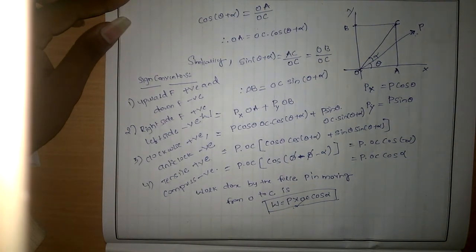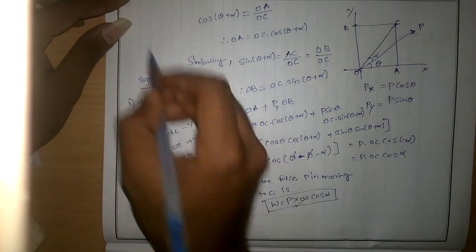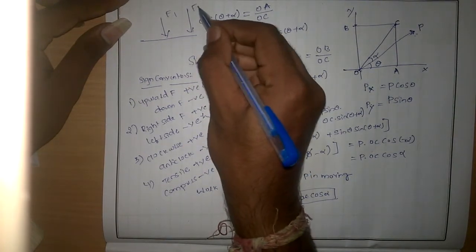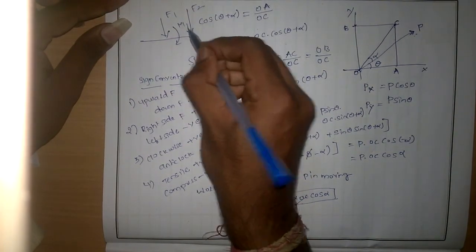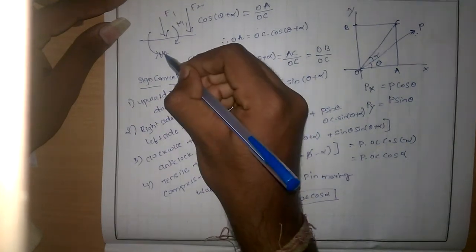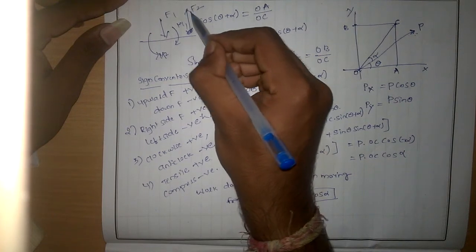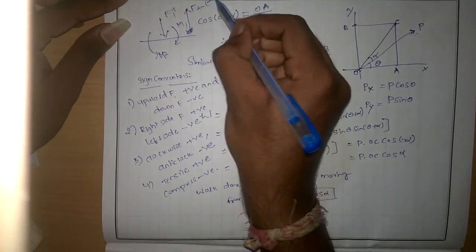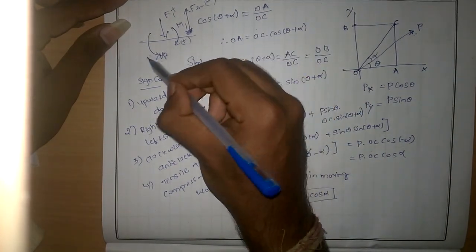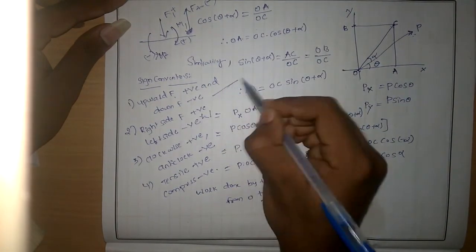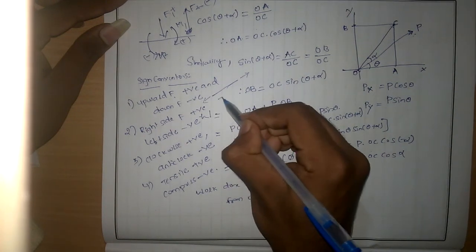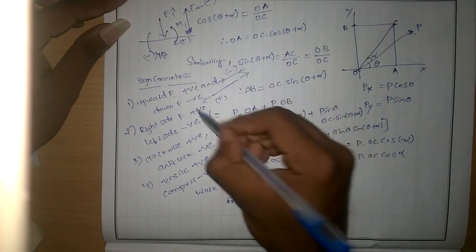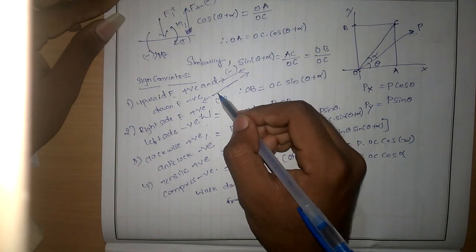In the next lecture, we will solve problems based on this. As an example, consider a beam having forces F1 and F2 and moments M1 and M2. F1 acts downward (negative) and F2 acts upward (positive). The clockwise moment M1 is positive and the anti-clockwise moment M2 is negative. For a bar, forces directed away are tensile (positive) and forces directed toward are compressive (negative). In the next lecture, we will solve problems based on virtual work.